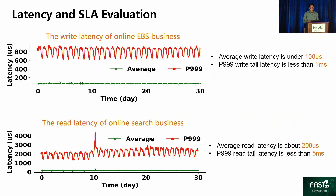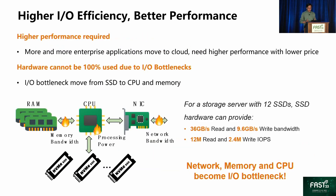This is a latency and SLA evaluation result monitored in our actual production environment. EBS and search are typical latency-sensitive applications in cloud. We gathered one-month metrics data. For EBS service, the average write latency is controlled under 100 microseconds and the P99.9 tail latency is less than one millisecond. For online search service, the average read latency is controlled around 200 microseconds and the P99.9 read tail latency is less than five milliseconds. By adopting user-space storage design, full-stack latency optimization, and tail latency control mechanisms, Pangu 2 satisfied most customer requirements and offers excellent performance.